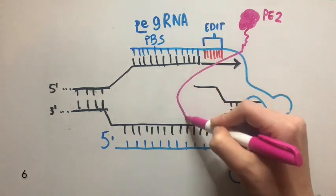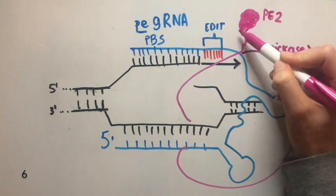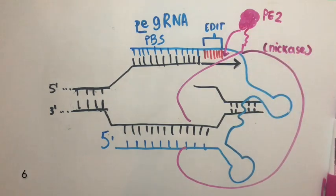PE2, which is conjugated to reverse transcriptase to incorporate the new genetic info. It is also conjugated to the Cas9 nickase, which causes cuts in the DNA.